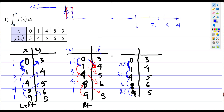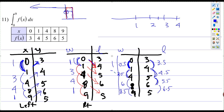So you would be looking for the midpoint heights here: that would be 3.5, 4.5, 5.5, and 6.5. This is now our length. The width is still 1, 3, 4, and 1. It's just that we had to find the midpoint to plug into the function to get this height.